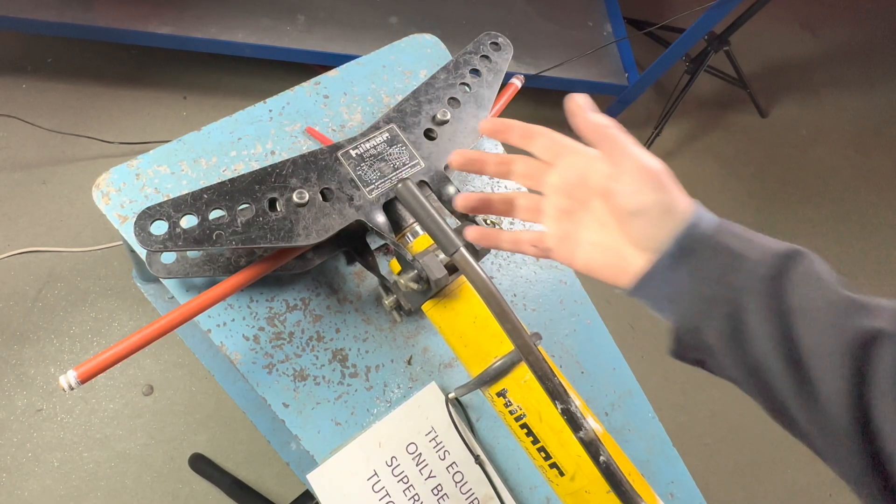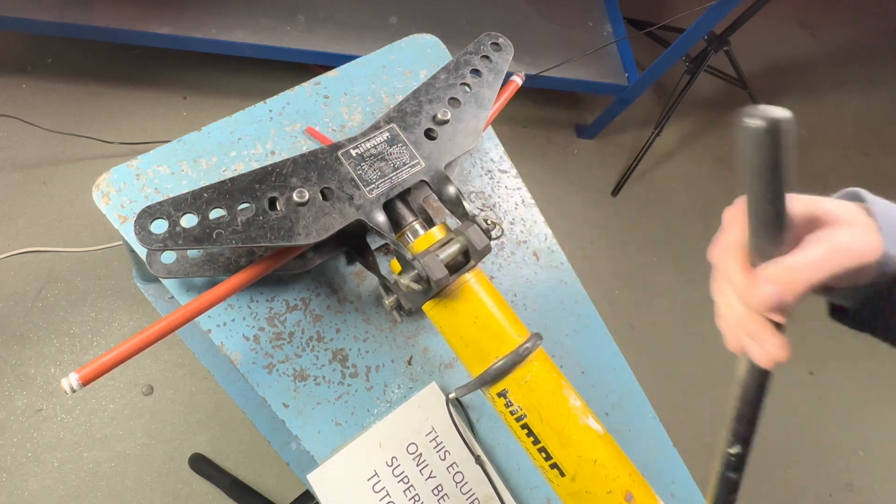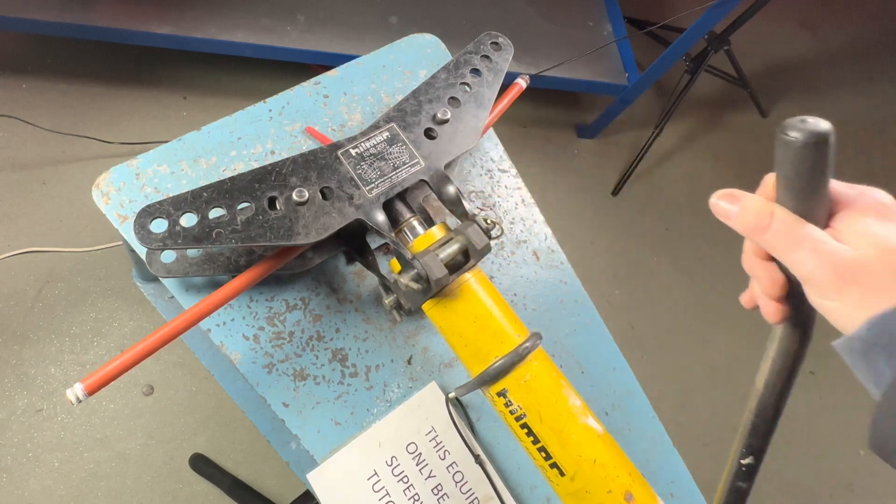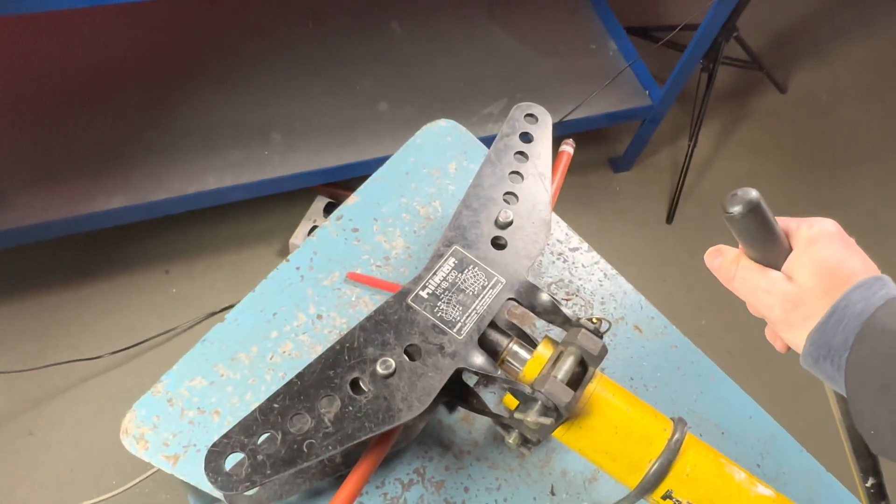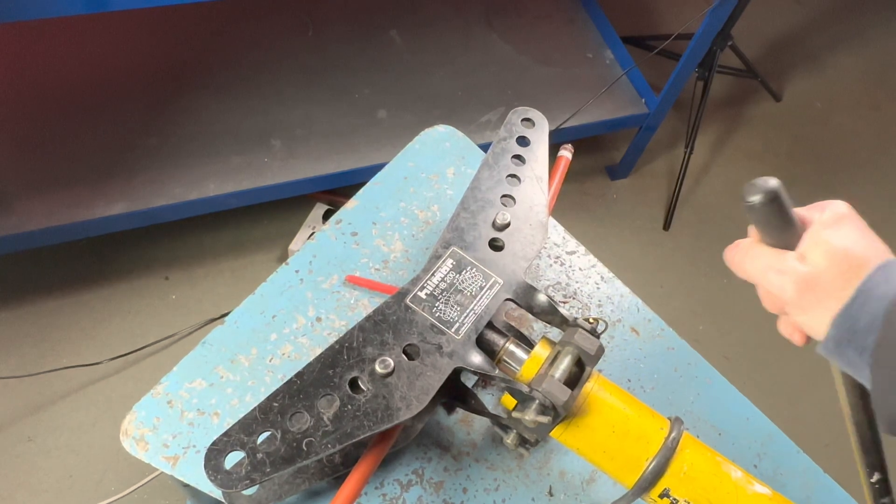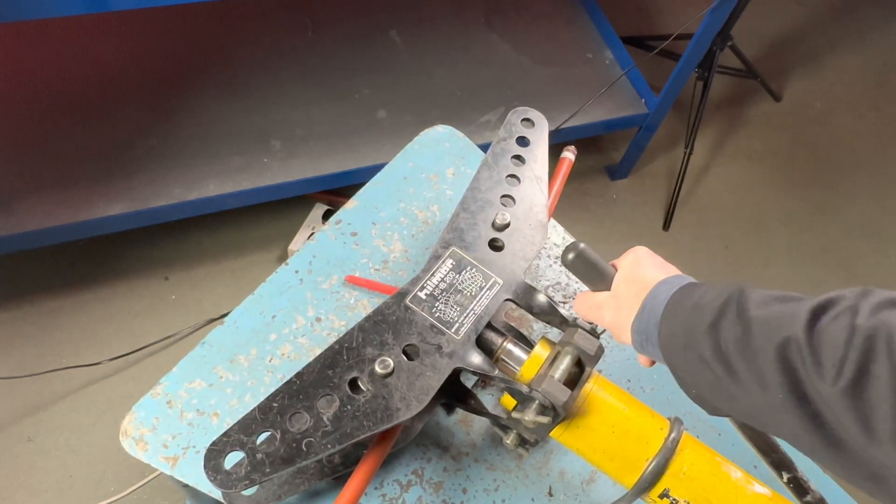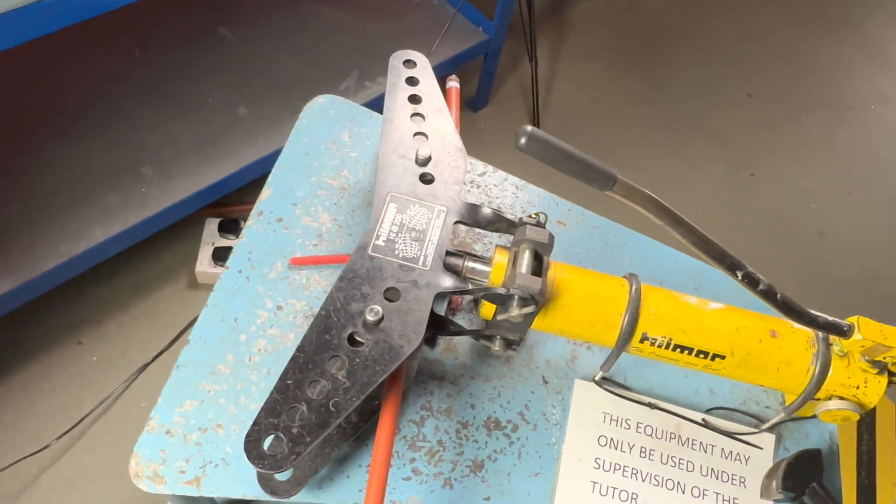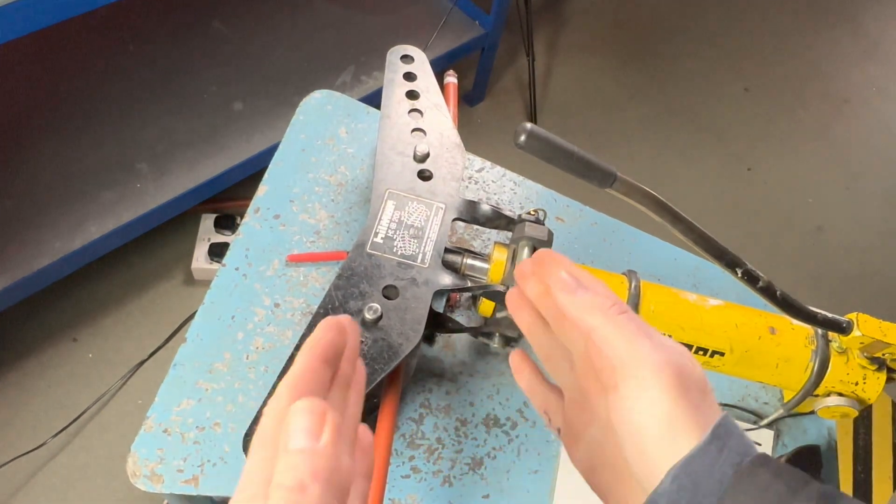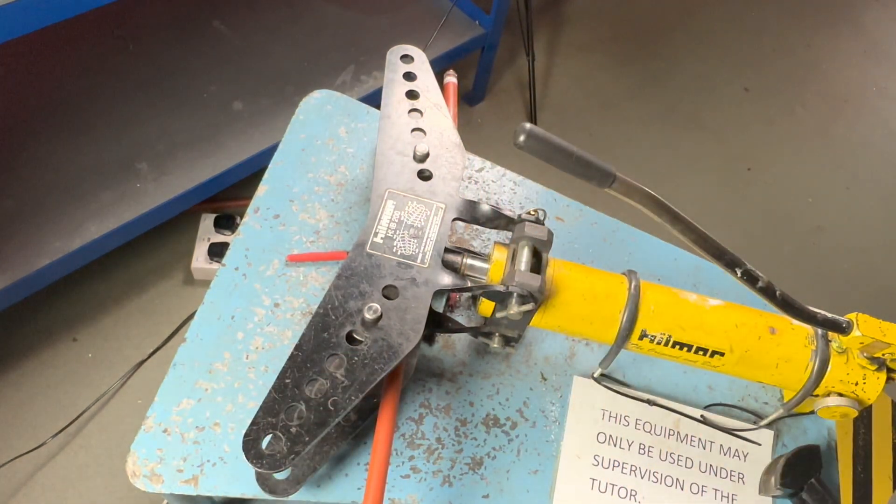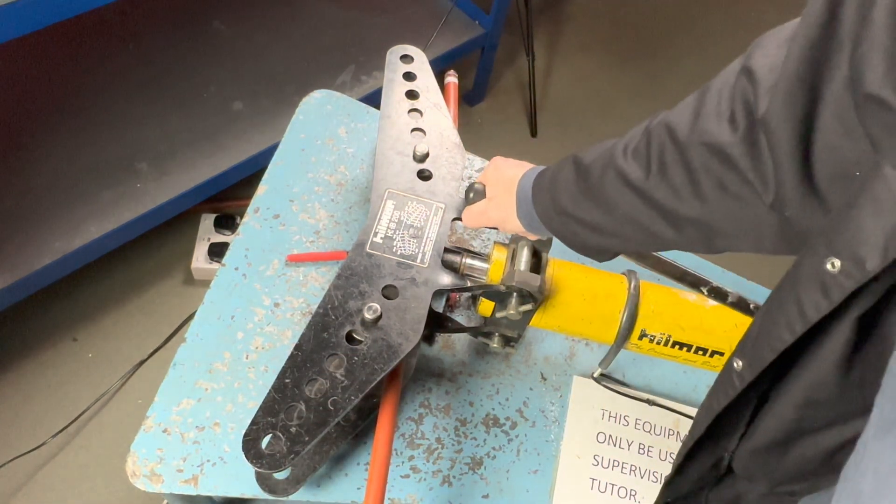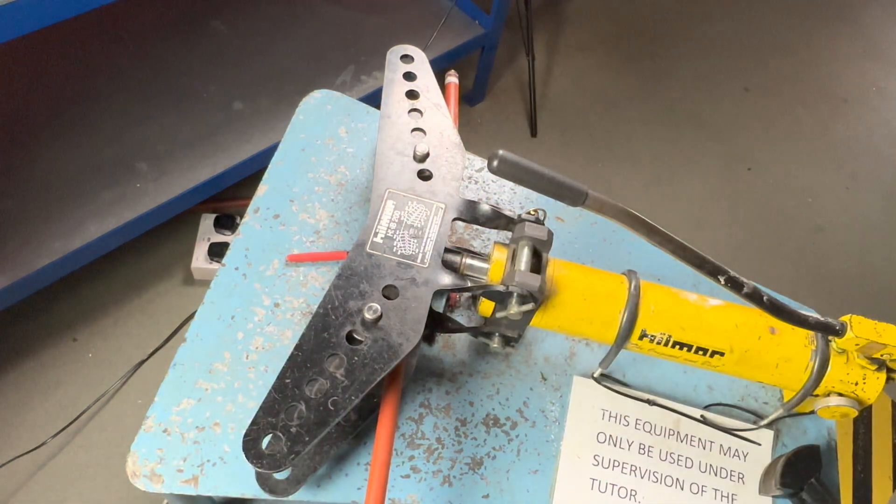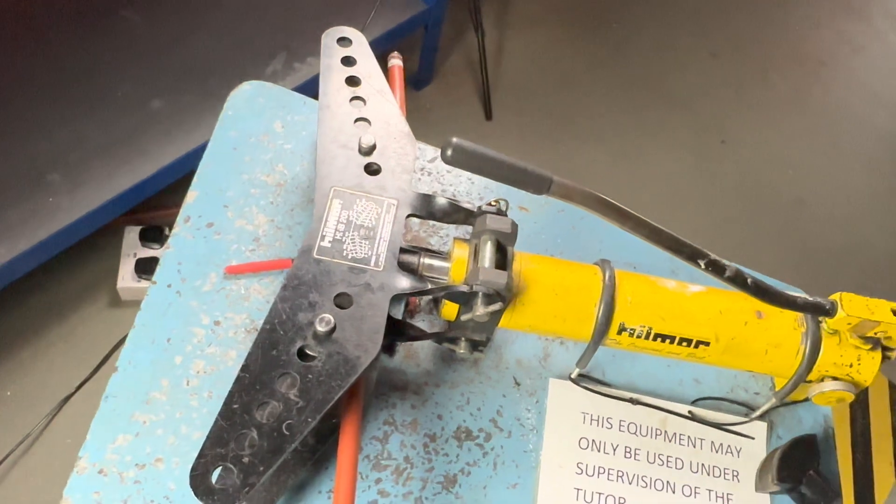We're now ready to bend the pipe. We do it nice and slow. We can eyeball it so it's parallel - this and this one's in line. As you can see it's got a little bit more to go. I'll do it really slow because it moves when you bend it - it moves in both ways.